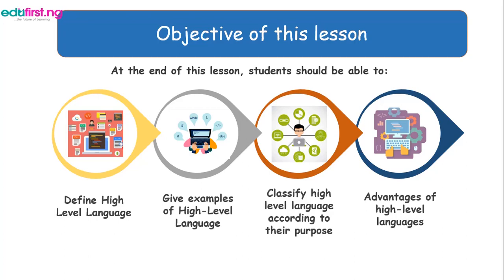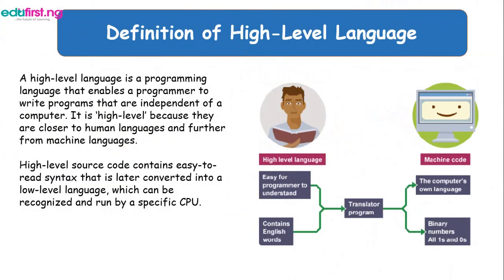A high-level language is a programming language that enables a programmer to write programs that are independent of a particular type of computer, unlike other levels of languages. The programmer writes programs that don't depend on a particular type of computer, meaning you can work on different types of computers. They are called high-level because they are closer to human languages — just like our human languages that we use for communication.